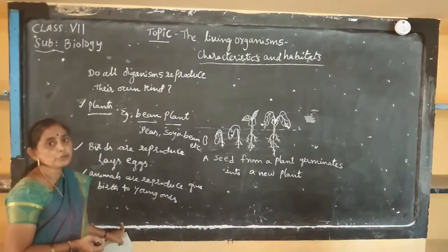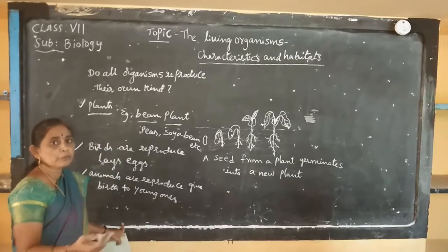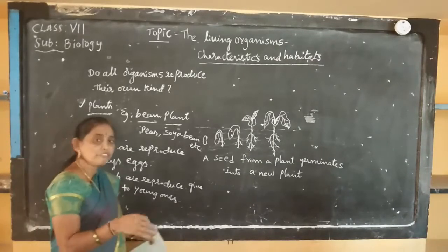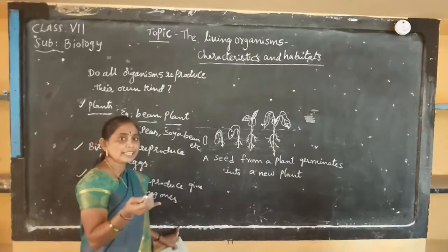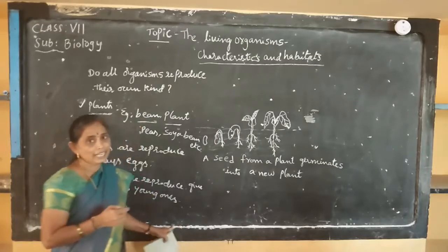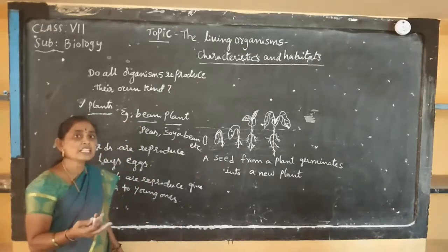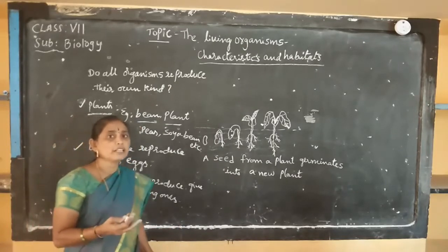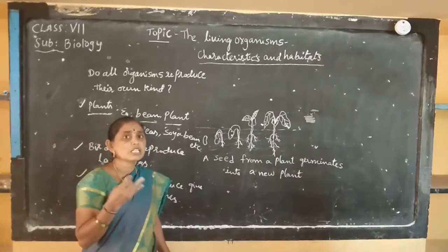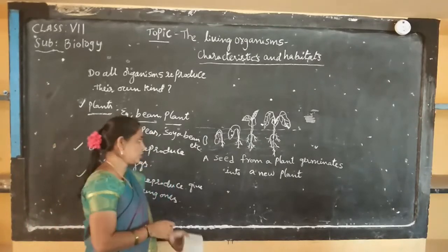Some plants reproduce in different ways, for example cutting, layering, and grafting. And some plants reproduce through their vegetative parts, like roots, stems, and leaves.